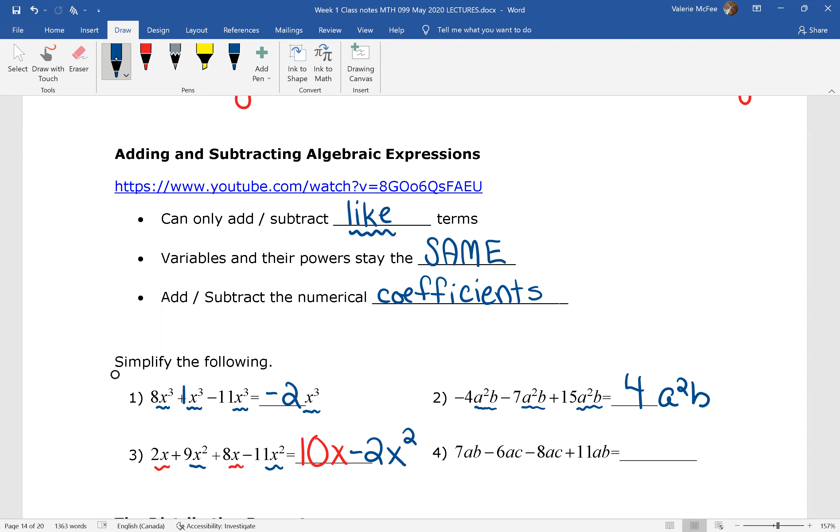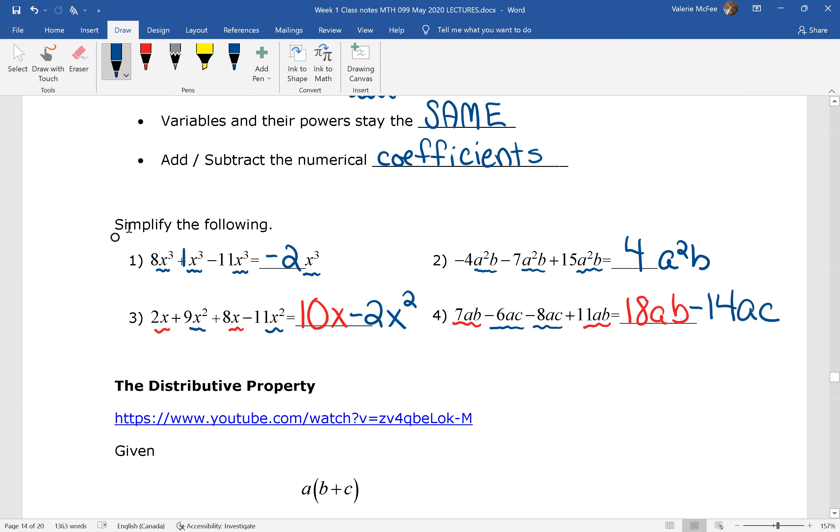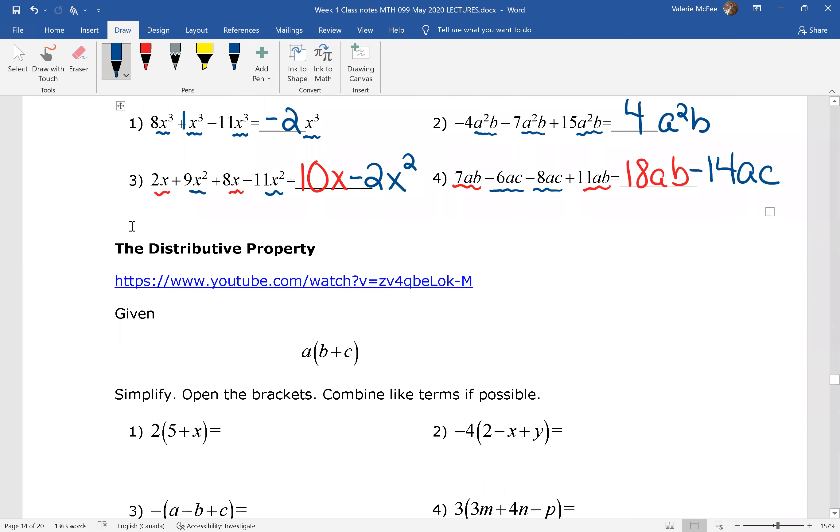Pause your video and simplify the next one. So 7ab plus 11ab is 18ab. Notice we don't change the exponents when we're adding and subtracting. Negative 6ac minus 8ac minus 14ac. I think we will leave the distributive property for our final video this week.